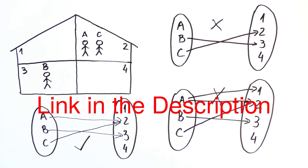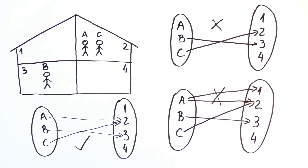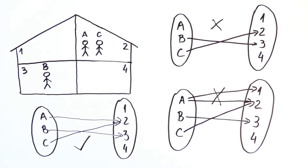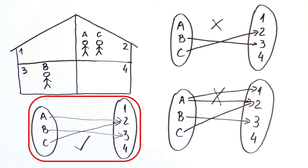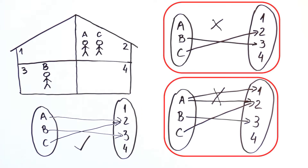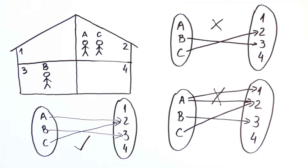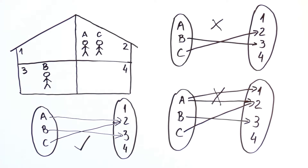In the previous video, we had an example of people in rooms. We called people A, B and C and we called rooms 1, 2, 3 and 4. Using that example, we illustrated what is a function and also what isn't a function. The particular function we looked at associated to each person the room they were in. However, functions in general don't have to have some inspiration in the physical world. So now we'll just look at the two sets and functions from one set to another.